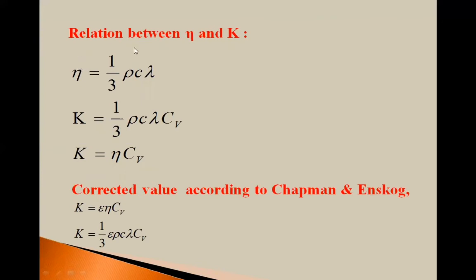We will now see the relation between the coefficient of viscosity η and the coefficient of thermoconductivity K. Since η = (1/3)ρcλ, we have K = (1/3)ρcλ·Cv = η·Cv. The corrected value according to Chapman and Enskog is K = ε·η·Cv, or equivalently K = (1/3)ε·ρcλ·Cv.